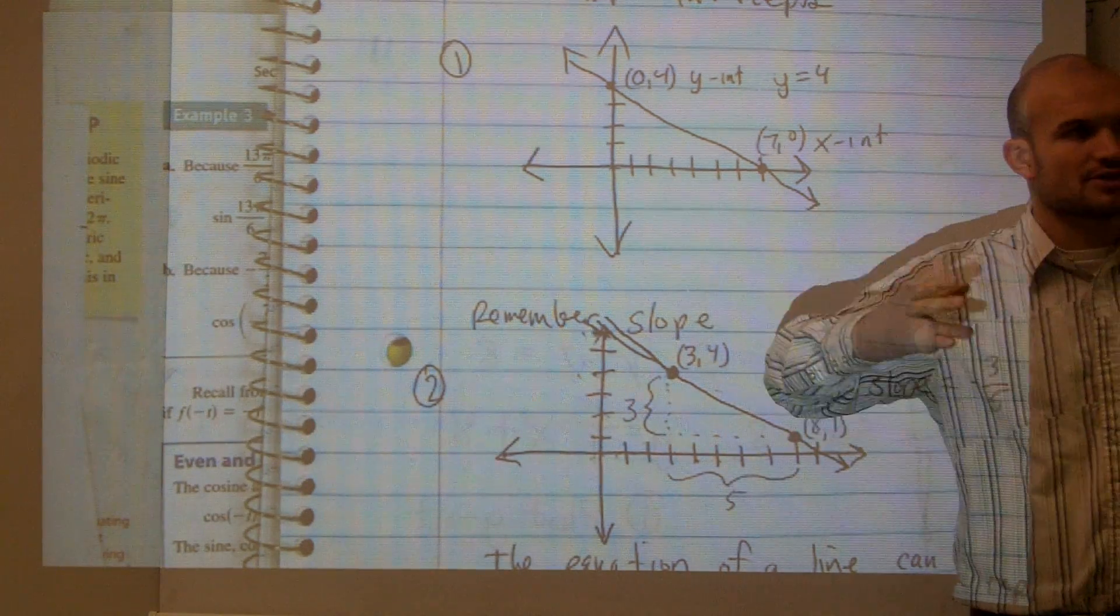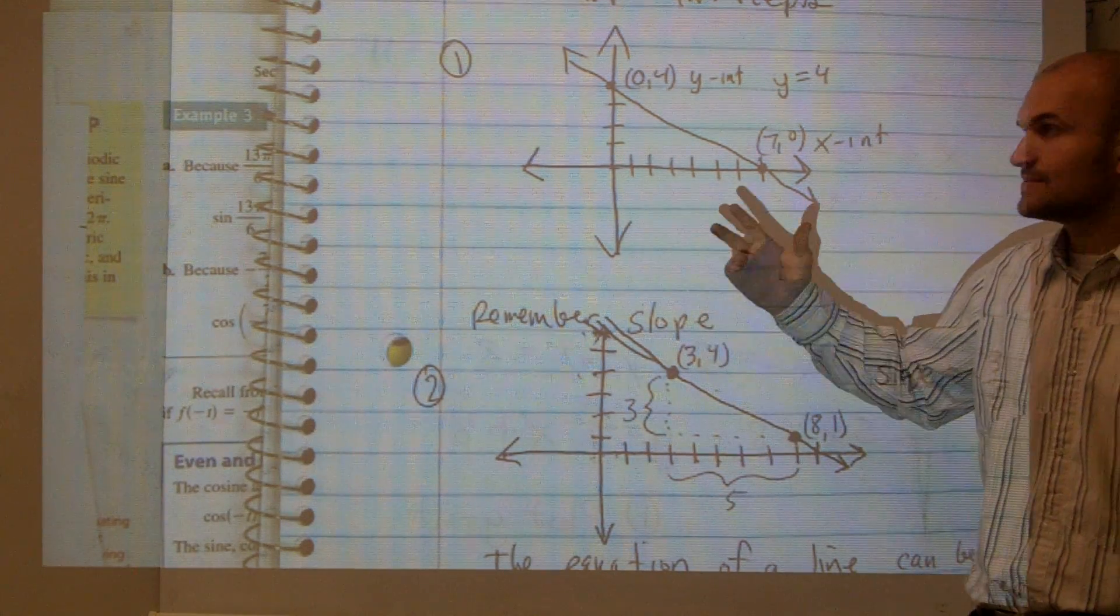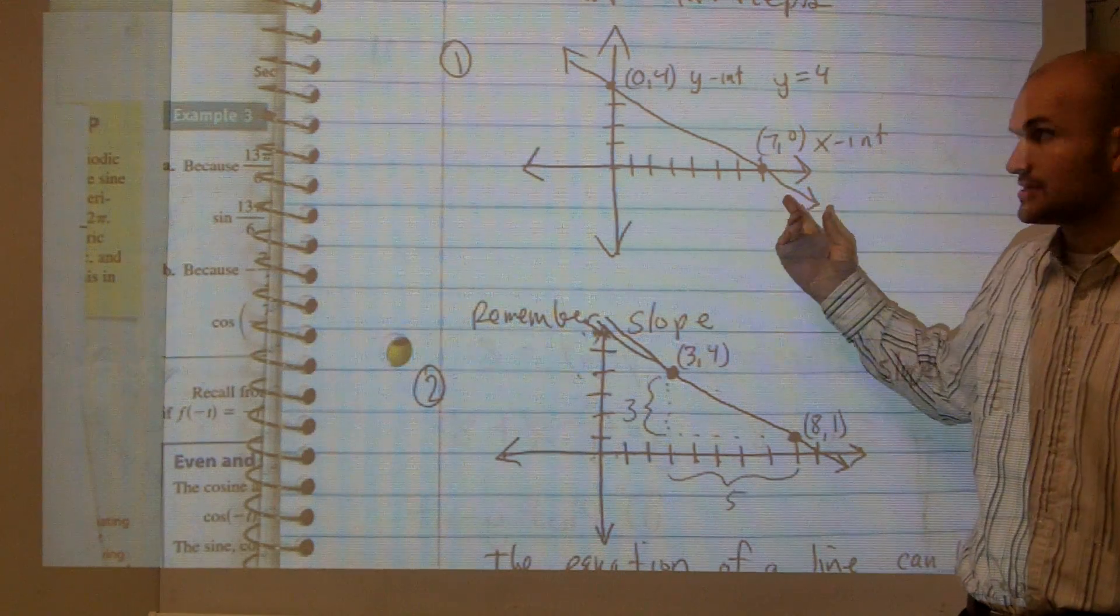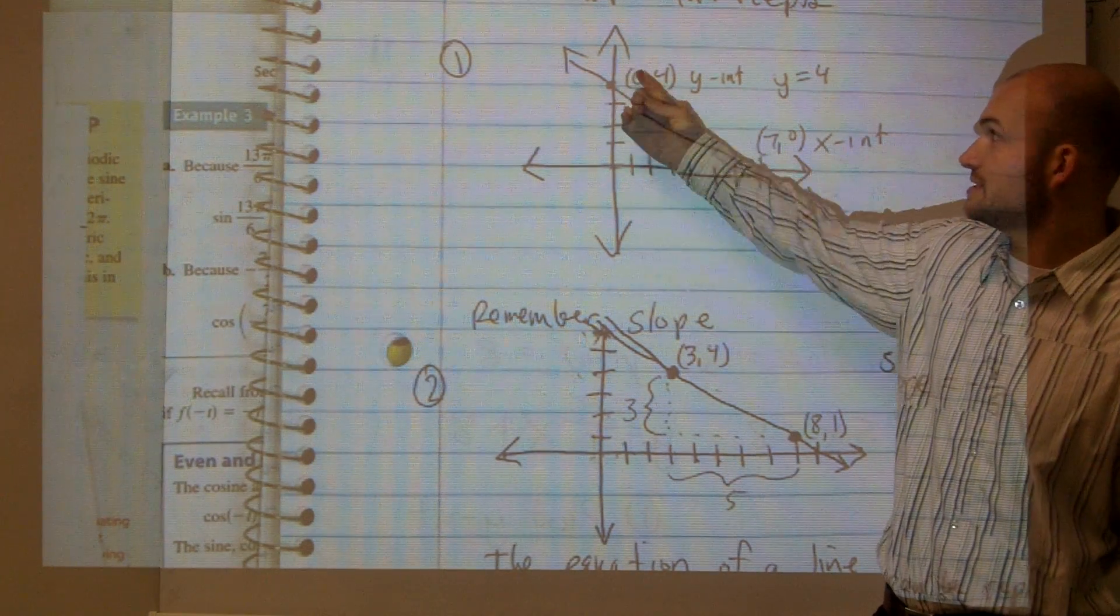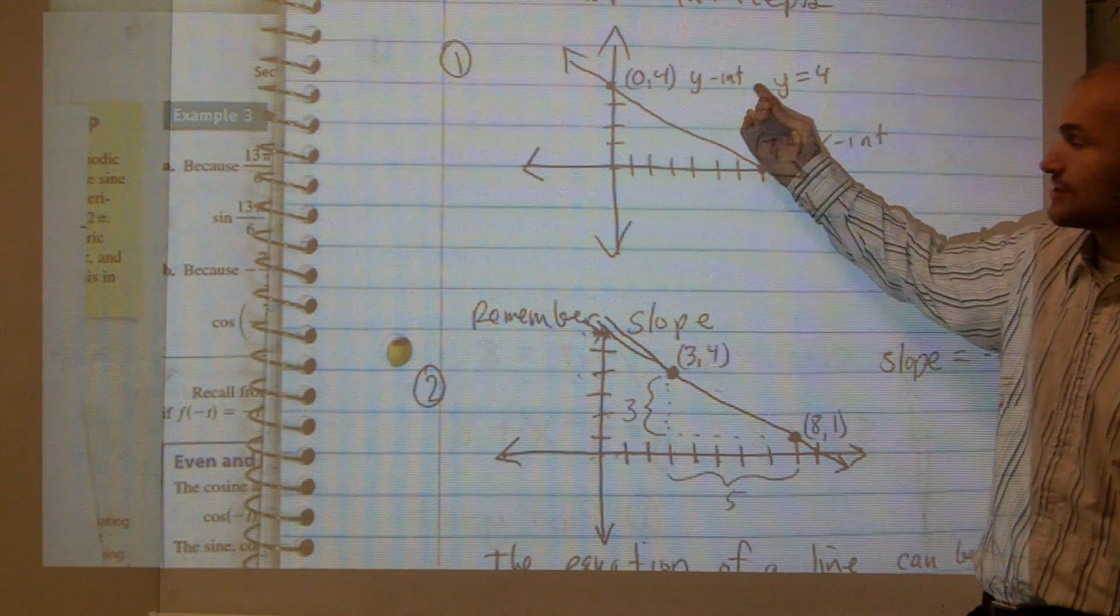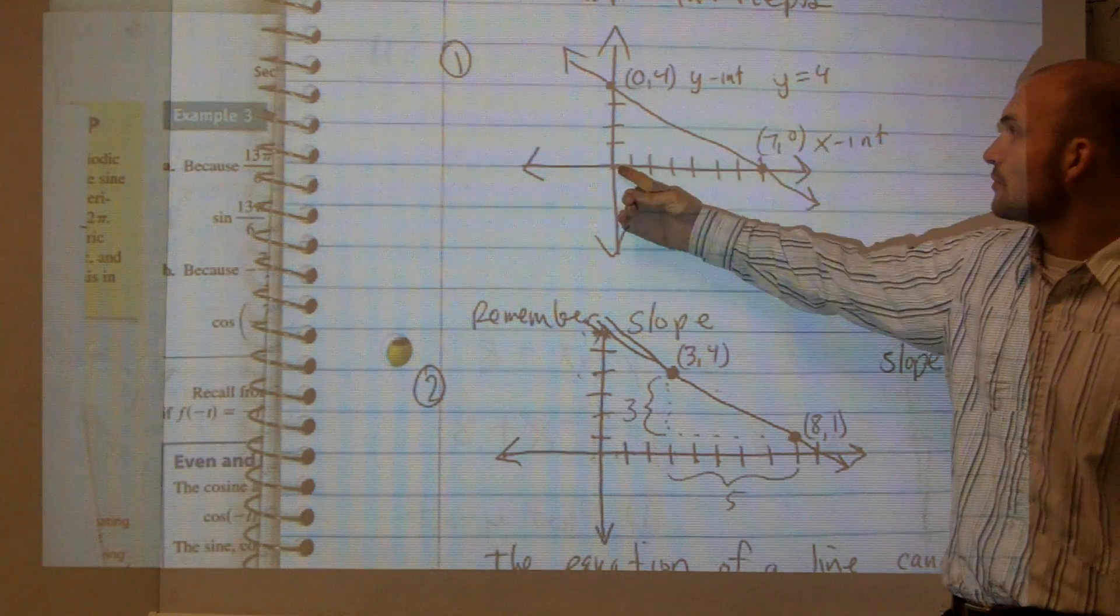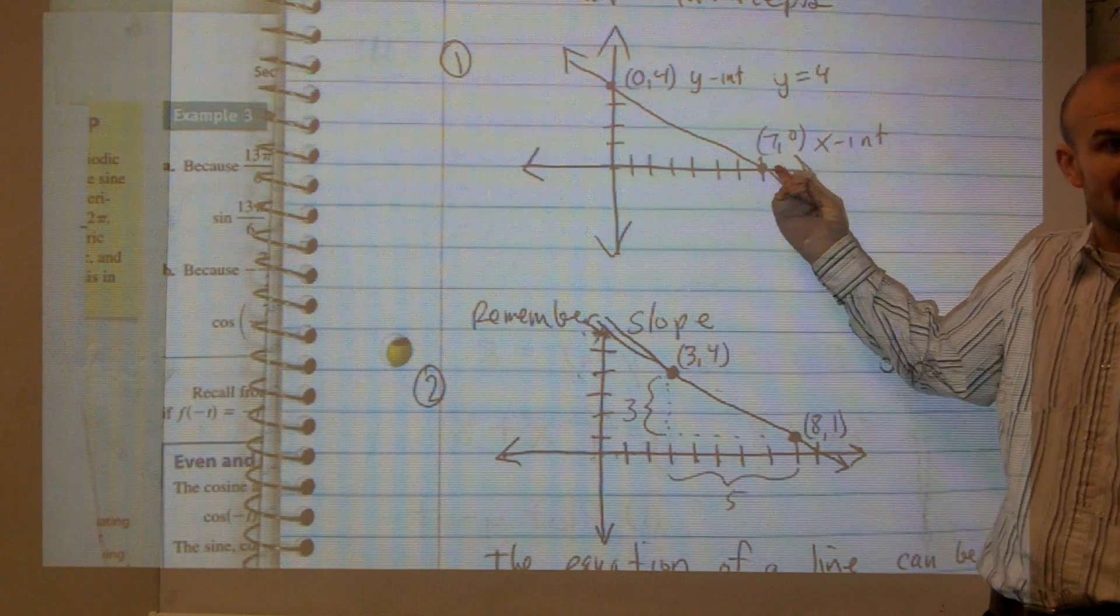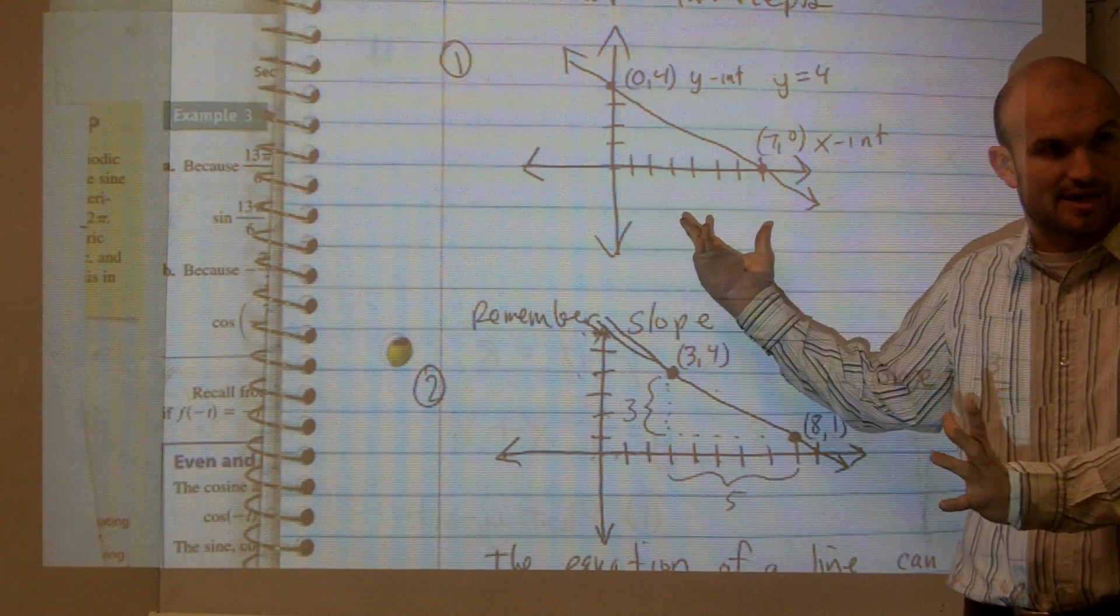A couple things to remember: the intercepts are where a graph crosses the x and y axes. Where it crosses the y-axis is at (0,4), which means the y-intercept equals 4. Where it crosses the x-axis is the x-intercept. Those are your two intercepts.